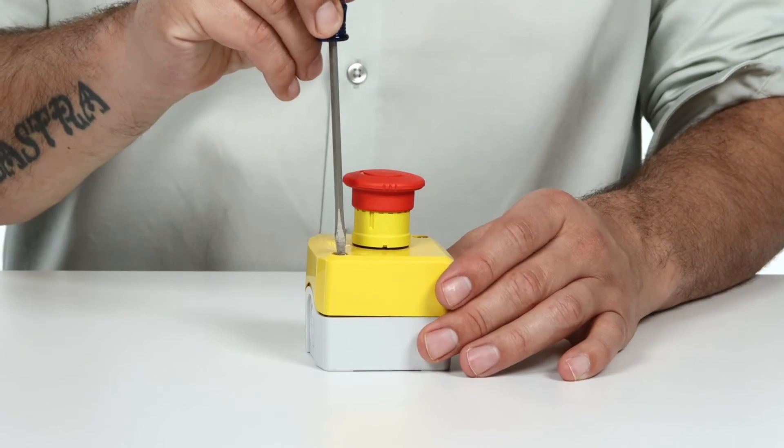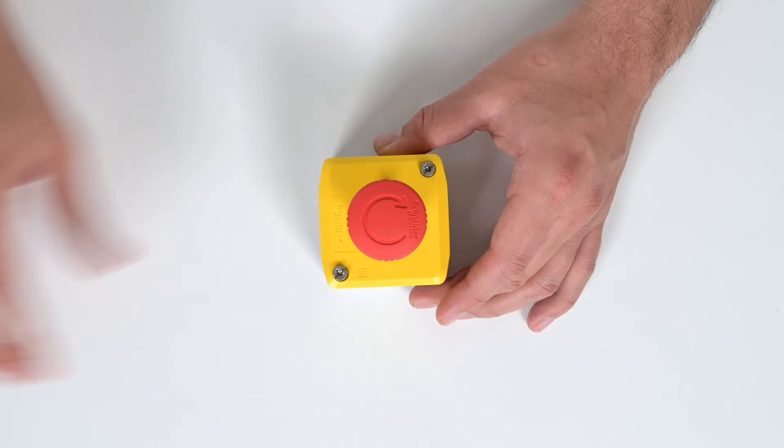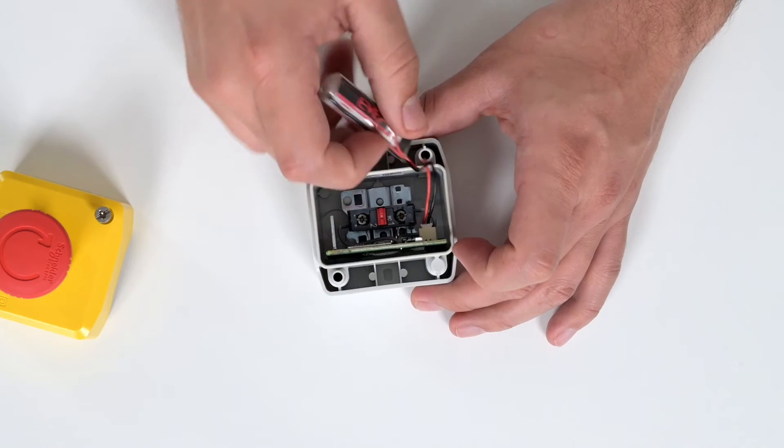To activate your sensor, first unscrew the top, carefully remove the two halves apart, and next connect your battery.